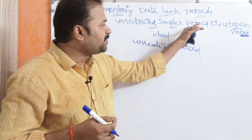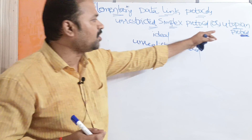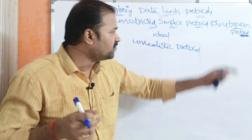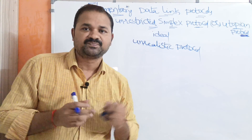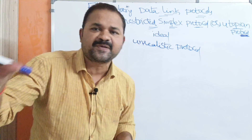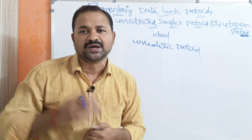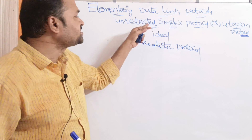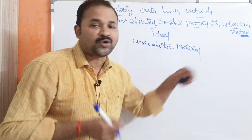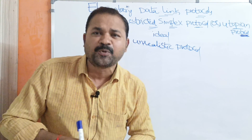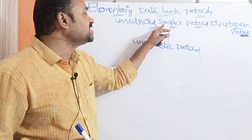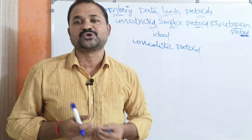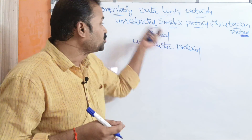The first elementary data link protocol is the unrestricted simplex protocol. This protocol can also be called the utopian protocol. The dictionary meaning of the word utopian is 'ideal' — everything is perfect, nothing goes wrong. We can say that the unrestricted protocol is an unrealistic protocol, because it is quite impossible to implement this protocol practically.